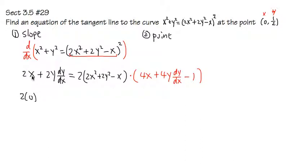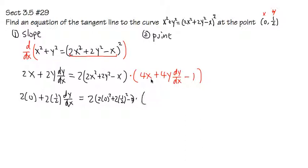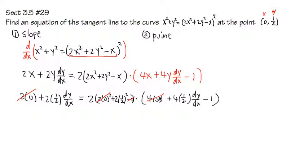So wherever I see x I'm going to substitute 0, and wherever I see y I'm going to substitute 1/2. Here I will get 2 times 0 for x, plus 2 times 1/2, and then dy/dx, equals 2 times (2 times 0 squared plus 2 times (1/2) squared minus 0) times (4 times 0 plus 4 times 1/2 dy/dx minus 1). After plugging in 0 for x and 1/2 for y, 2 times 0 is 0, 2 times 0 squared is 0, minus 0 doesn't matter, and 4 times 0 doesn't matter — so those all cancel.